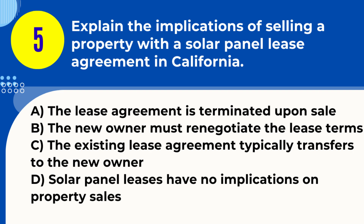Answer: C. The existing lease agreement typically transfers to the new owner. Explanation: In California, when a property with a solar panel lease is sold, the lease agreement usually transfers to the new owner, who must then adhere to its terms.